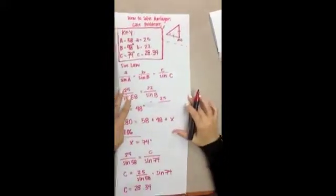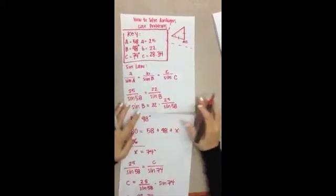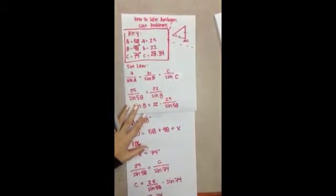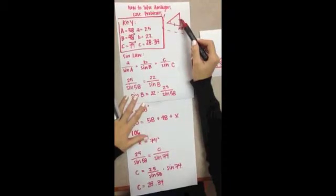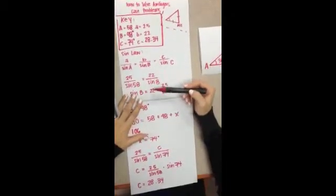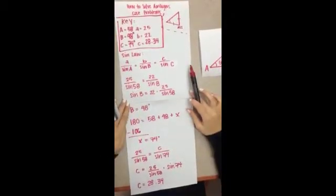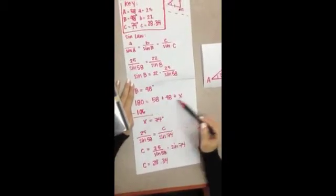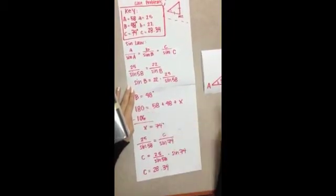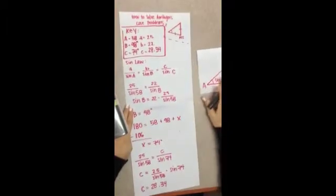So, let's review what we have done today. We have solved an ambiguous case problem when we were given an angle and its opposite side, using the sine law and using our previous knowledge that the sum of all angles in a triangle are 180 degrees.